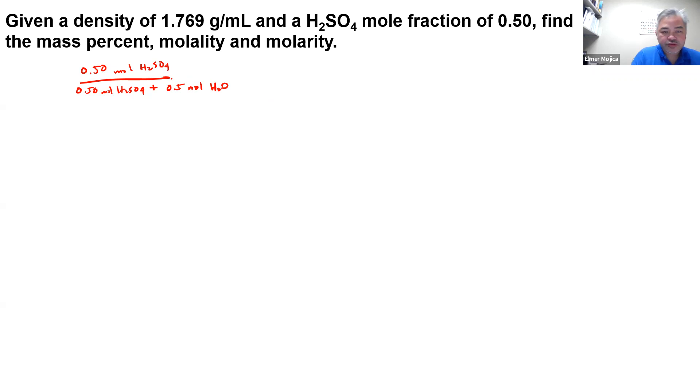Now, having that assumption, what we can do, we can get the mass percentage by getting the mass of sulfuric acid and the mass of the water. So you have 0.5 multiplied with 98.78. So this is just your molar mass. So you will get around 49.04.